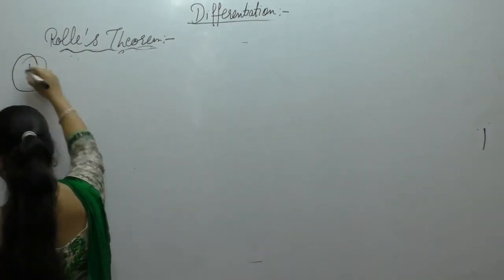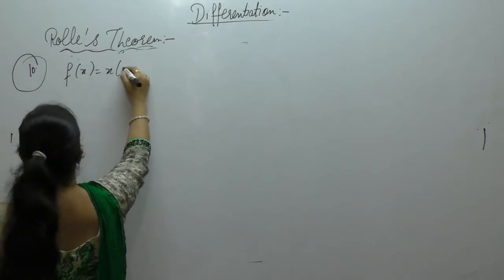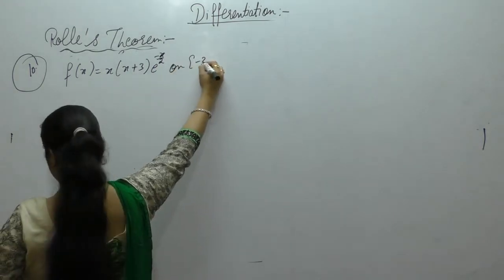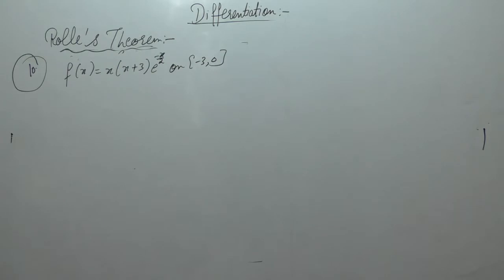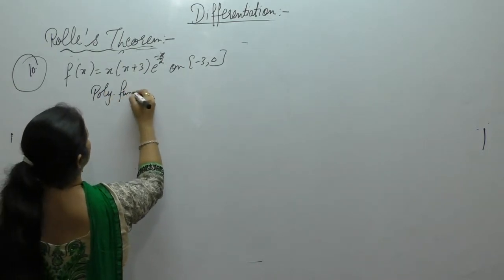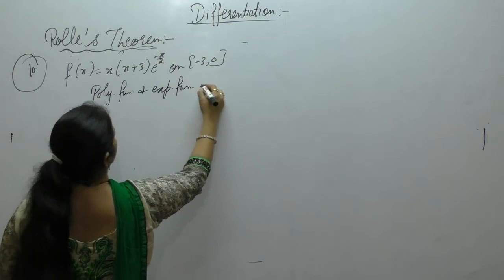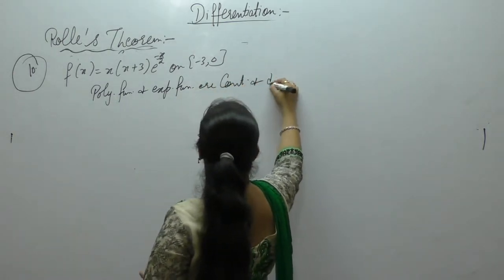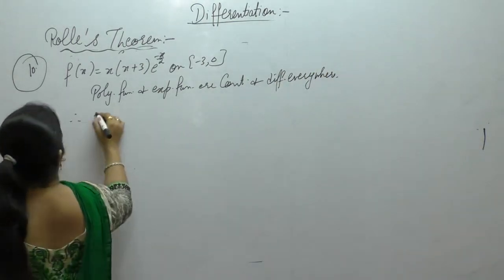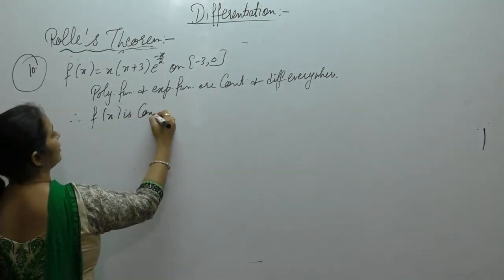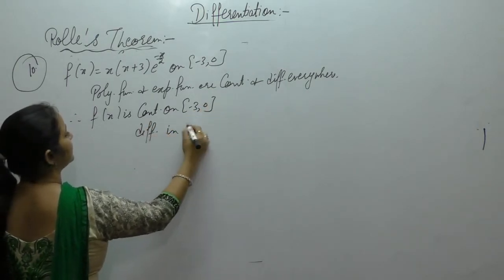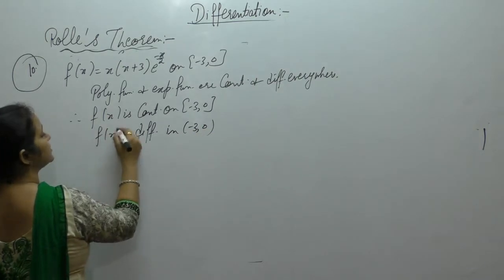Next, verify Rolle's theorem for the function f(x) = x(x+3)e^(-x/2) on [-3, 0]. Now, one is a polynomial function and the other is an exponential function. Polynomial functions and exponential functions are continuous and differentiable everywhere. Therefore, their product is continuous and differentiable. So f(x) is continuous on the closed interval [-3, 0] and differentiable on the open interval (-3, 0).